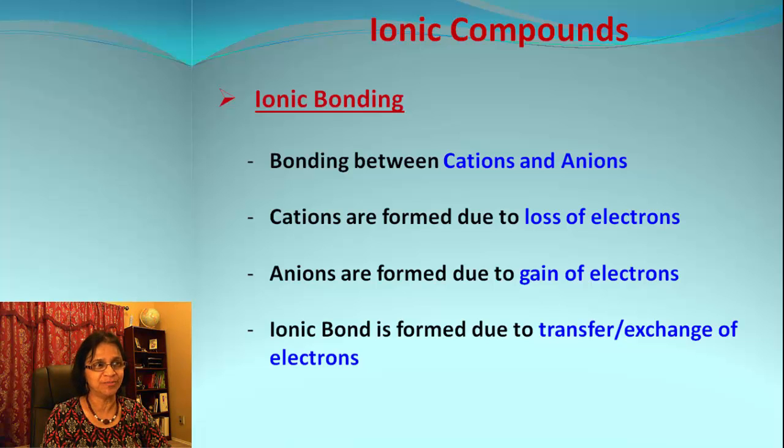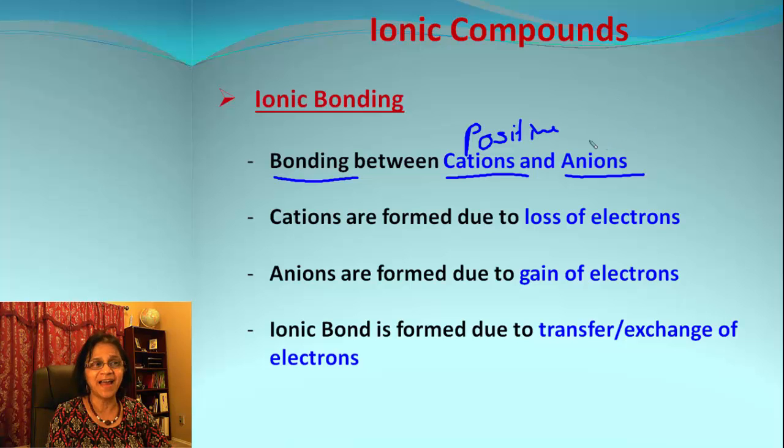If you remember, ionic compounds are formed because of ionic bonding, and ionic bonding is between cations and anions. Do you remember the charge on cations? Cations are positive charge and anions are negative charge.